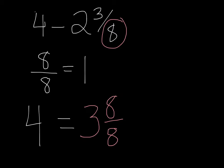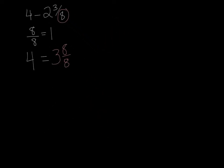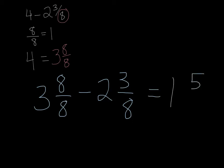Now we're ready to set it up. So we have 3 and 8 over 8 minus 2 and 3 over 8. 3 minus 2 is 1. 8 minus 3 is 5. And then you always keep the same denominator.